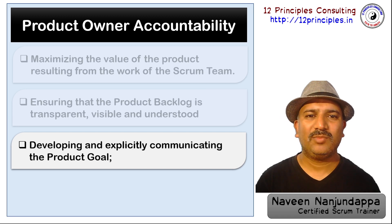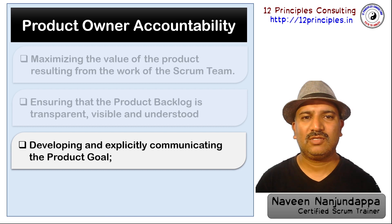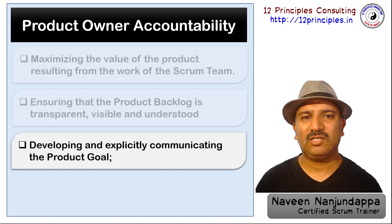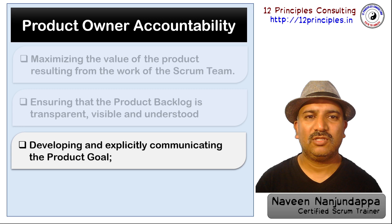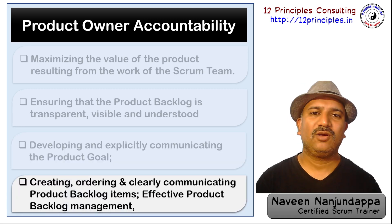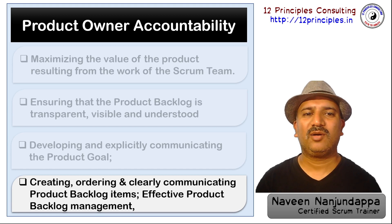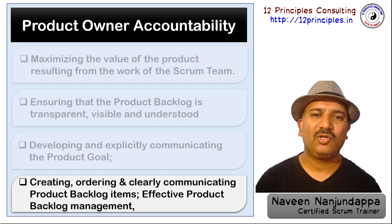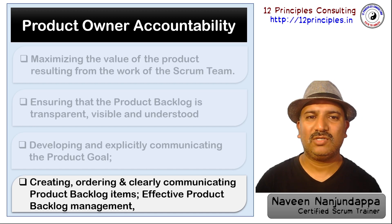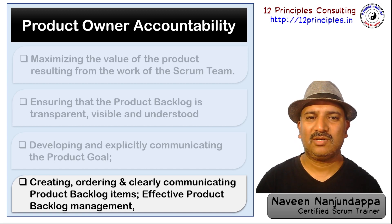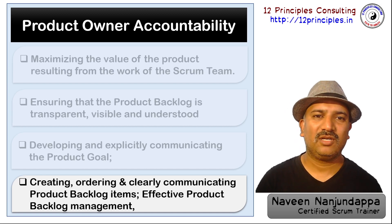The product owner helps in developing and explicitly communicating the product goal and the sprint goals and objectives. It is important that the product owner acts as a navigator towards the goal and the team members are the engine to run towards the goal. Creating, ordering, and clearly communicating every product backlog item to the team members and stakeholders becomes an essential responsibility of the product owner, and they are accountable for getting this done every sprint.